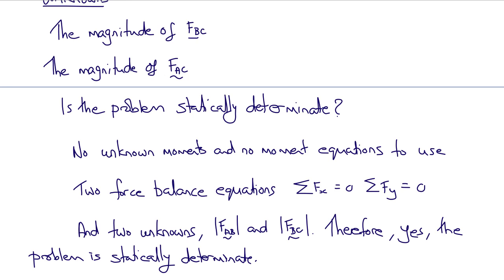Did you get that the force in the cable FBC has a magnitude of 348 Newtons, or perhaps you wrote 350? And the force in the rod, the magnitude of the force in the rod, is 170 Newtons? If so, I think you probably did it correctly. See you next time.